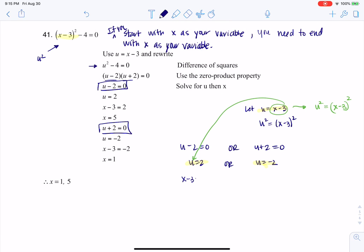So I know x minus 3 is equal to 2, or x minus 3 is equal to negative 2. And when I go to solve those, I'm going to get x is equal to 5, or x is equal to 1, and that's what I have going on here.